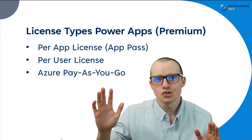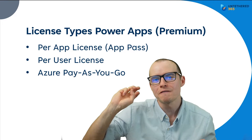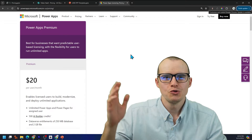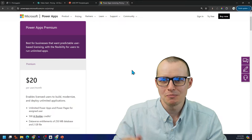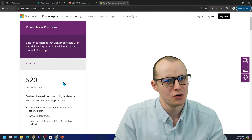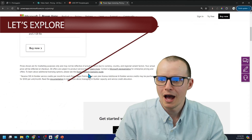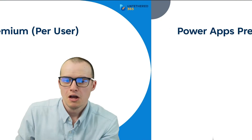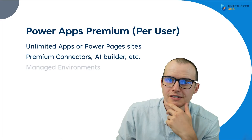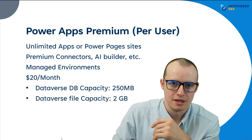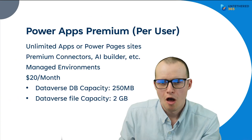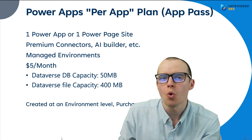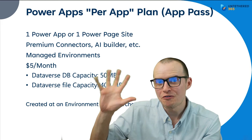What Michael just talked about is the per app license — one of the three Power Apps license types. You wouldn't know that if you just went to the Power Apps pricing page, because they only show you the per user license. But if you scroll down, there's a link right here to the Power Platform licensing guide. The per user license gives you everything for $20 a month per user. The per app license gives you almost the same, but just to one app, and it only costs $5 a month.